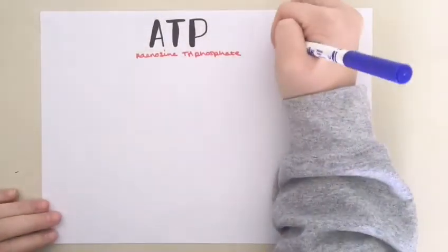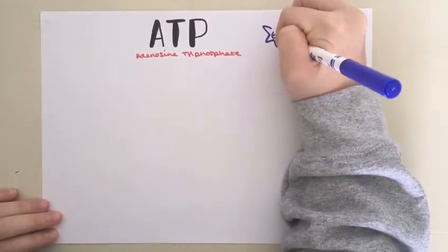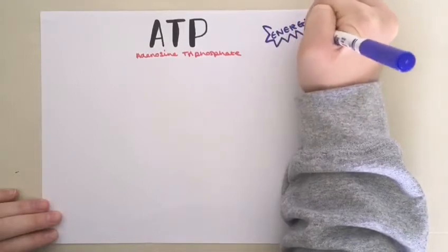ATP is known as the universal energy currency for organisms. This is because all organisms, from the simplest bacteria to humans, use ATP as an immediate source of energy within their cells.